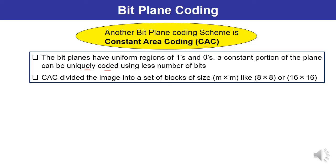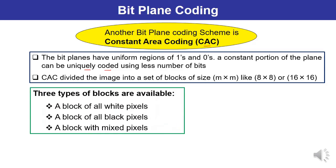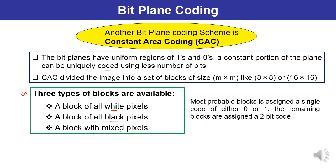Three types of blocks are available: a block of all white pixels, a block of all black pixels, and a block of mixed pixels. The most probable block is assigned a single code of either 0 or 1, and the remaining blocks are assigned 2-bit codes. Blocks which occur very frequently are assigned a single bit code, and blocks with less occurrences are assigned a 2-bit code.